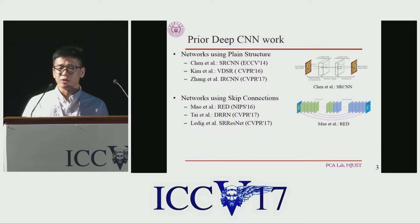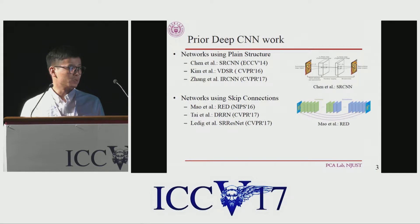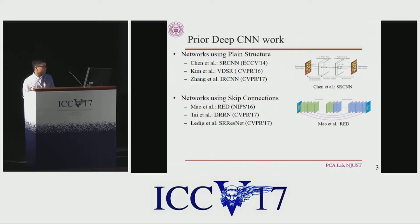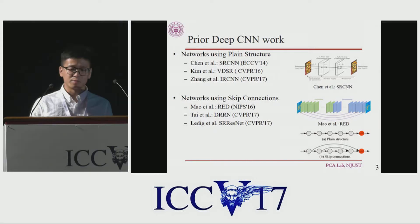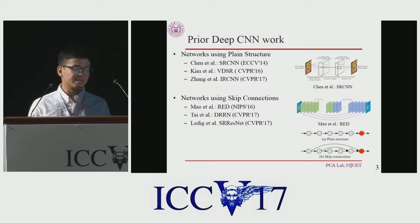Since we're using deep CNN models in this work, we mainly present some related deep CNN work here. They can be separated into two groups: the first one is networks using plain structure, and the second one is networks using skip connections. For plain structure, the current state is mainly influenced by its previous state. For skip connections, it is influenced by its previous state and the one that has a skip connection to it, while other previous states may have little influence.